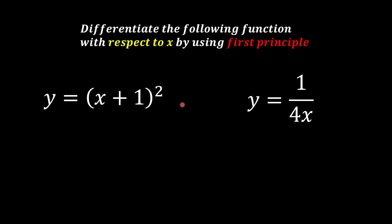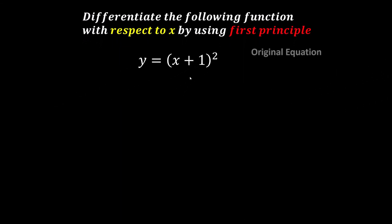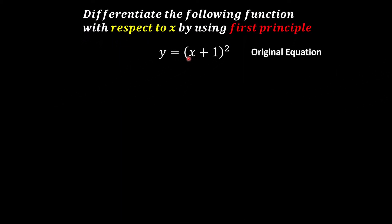Let's try to see more questions now, starting with this one, where we have an expression inside a bracket to the power of 2. For this case, we're going to expand the bracket first. So after expanding, we have x squared plus 2x plus 1. This is still the original equation, just expanded so it's easier for us to work with.